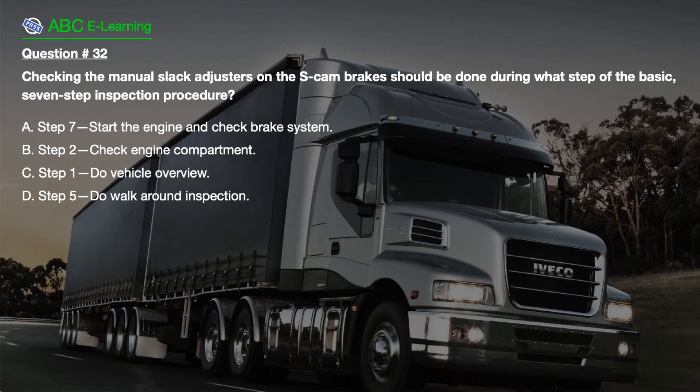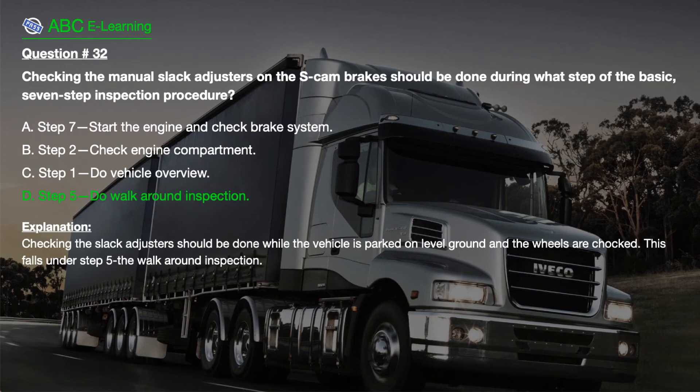Question number 32. Checking the manual slack adjusters on the S-cam brakes should be done during what step of the basic seven-step inspection procedure? A. Step 7, start the engine and check brake system. B. Step 2, check engine compartment. C. Step 1, do vehicle overview. D. Step 5, do walk around inspection. The correct answer is D. Step 5, do walk around inspection.